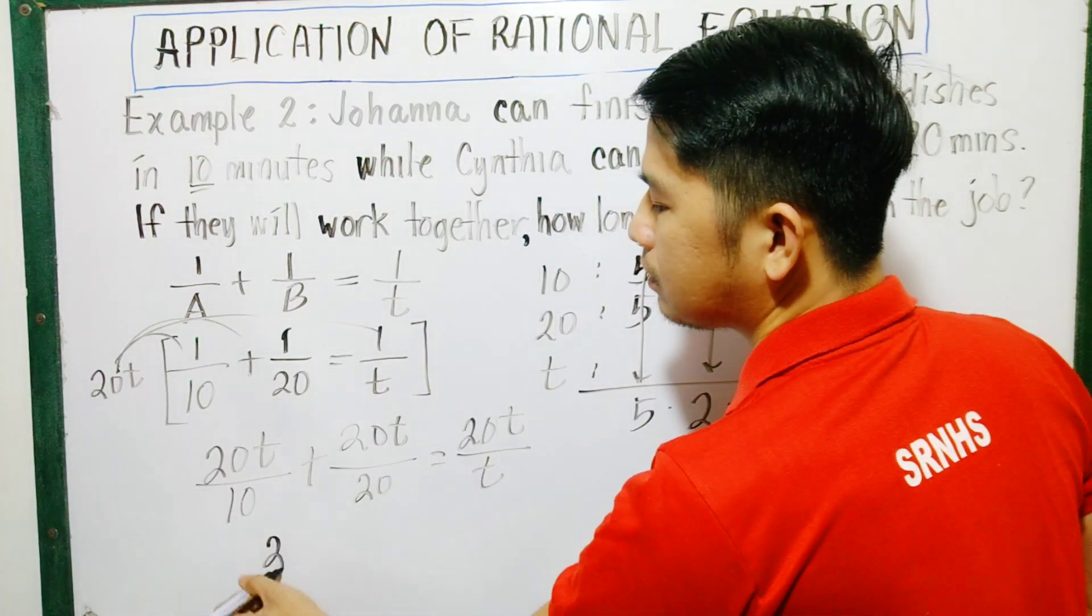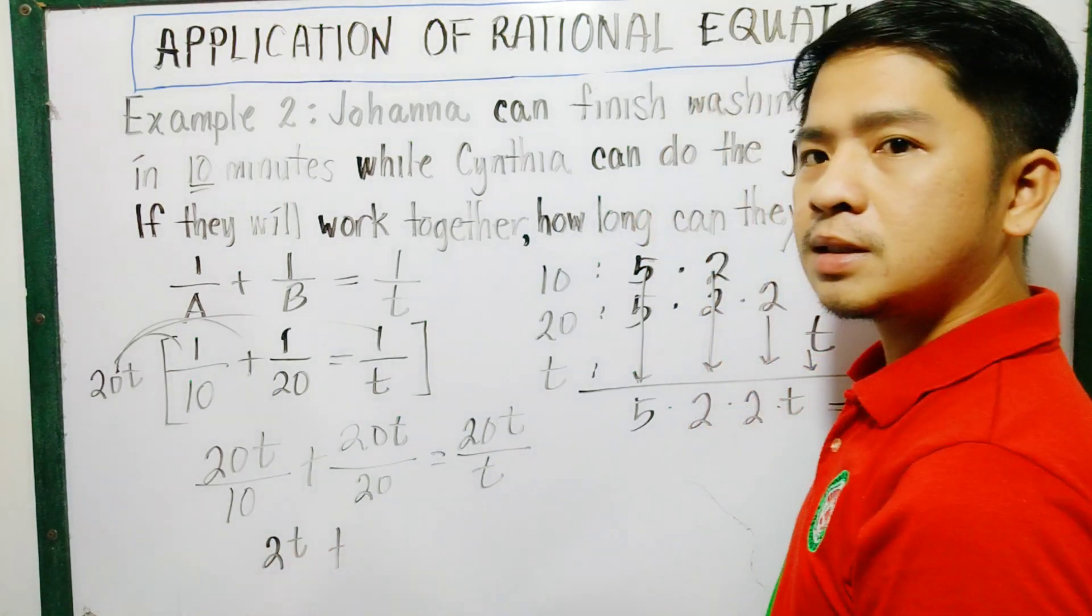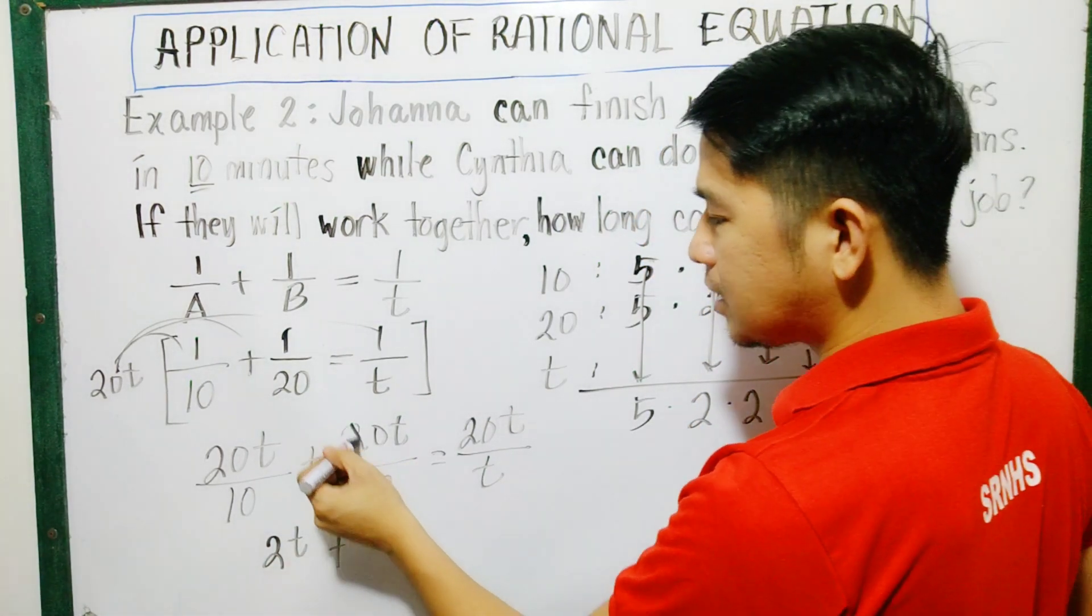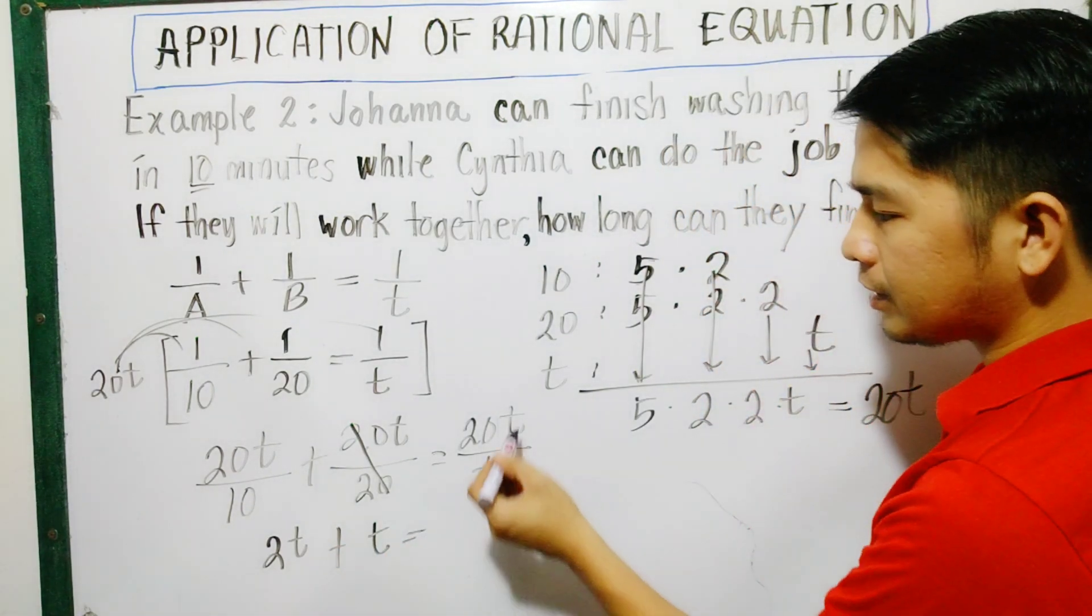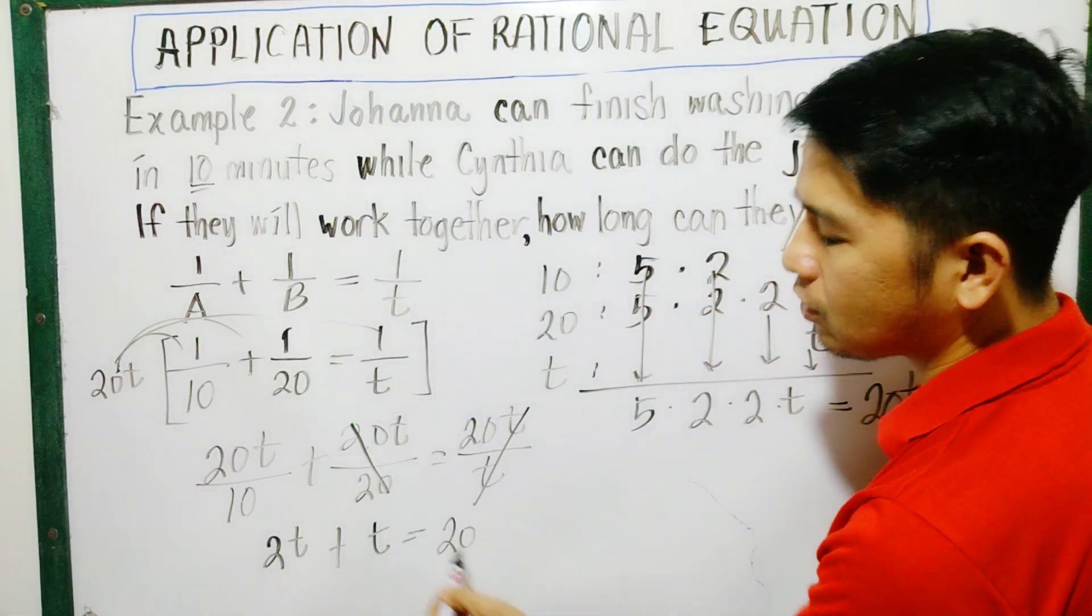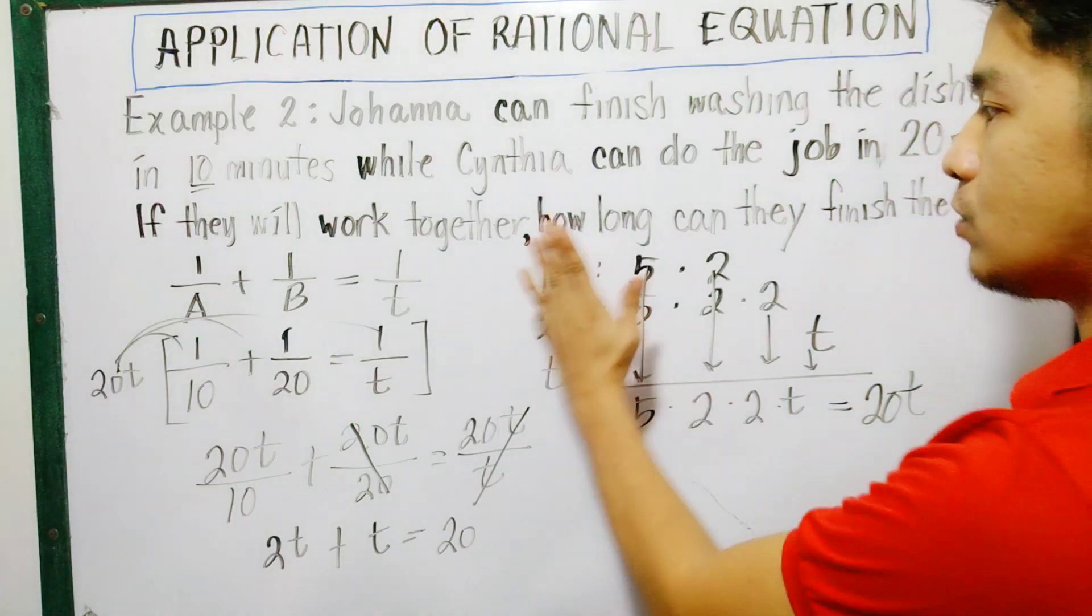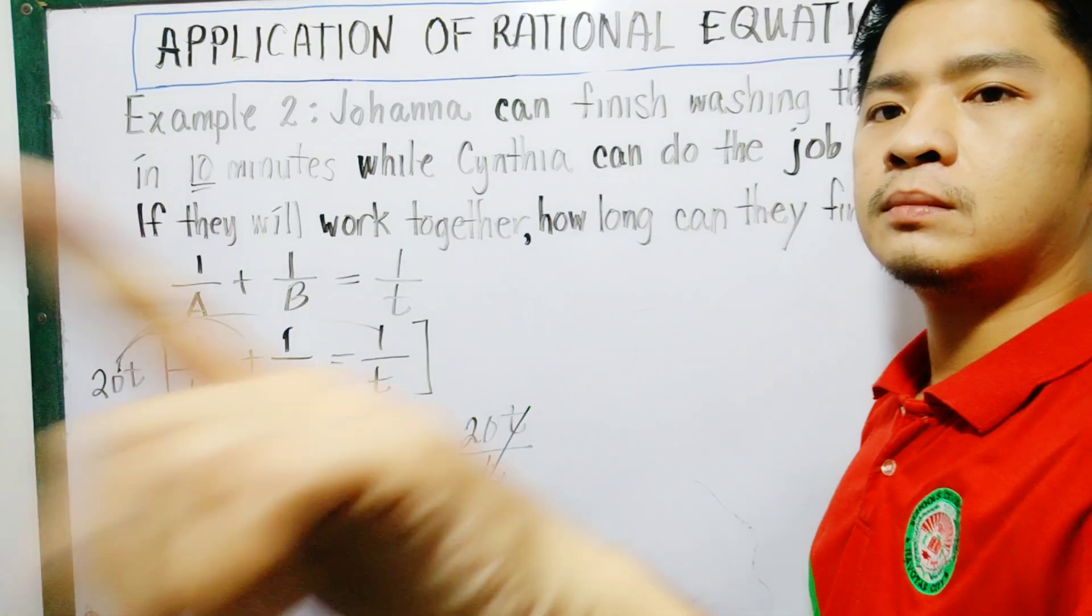We can divide 20 and 10, that is 2T. Plus, cancel these - leave 1, 1 times T is T. Cancel T, leaving 20 here. So, erase this.